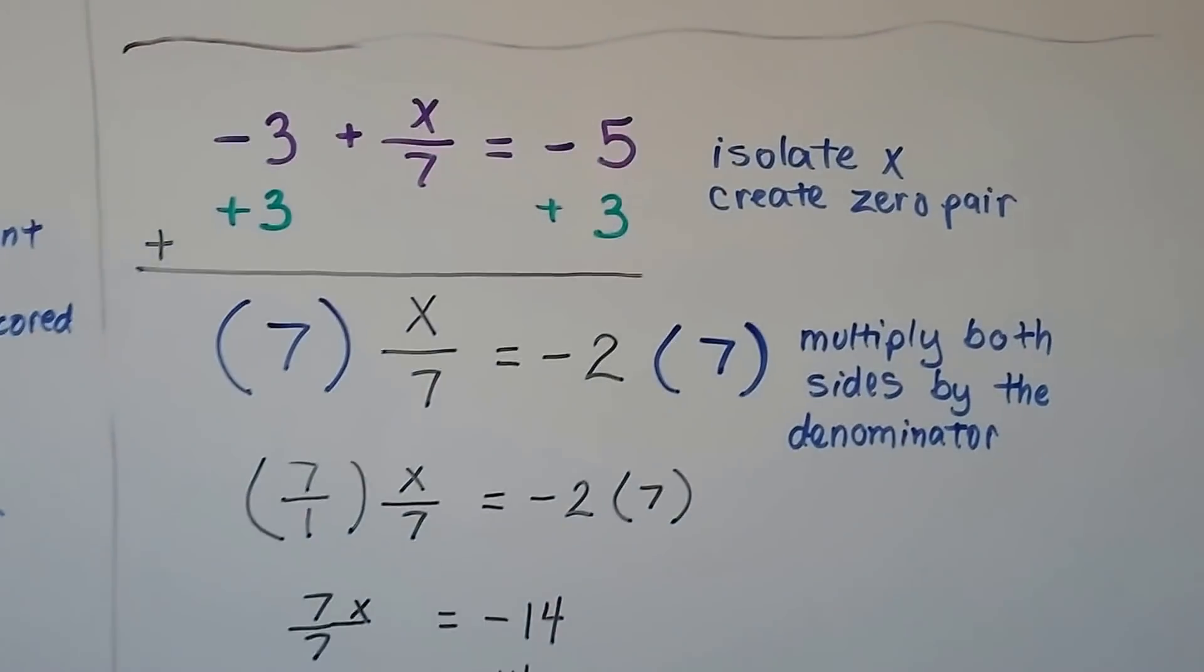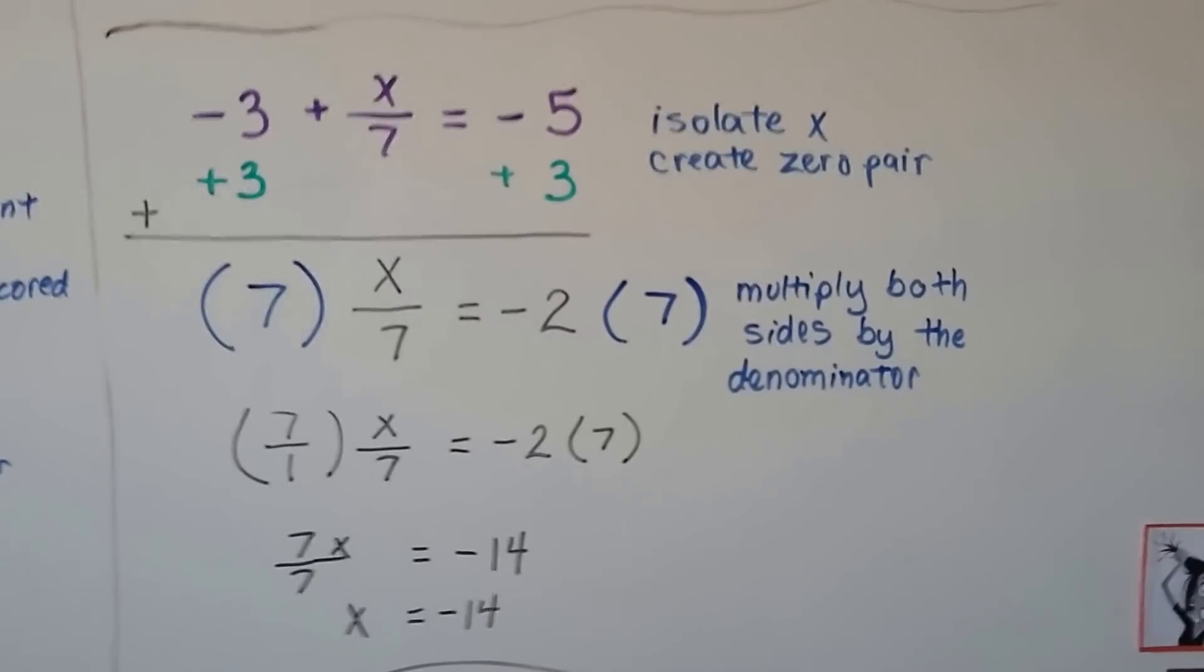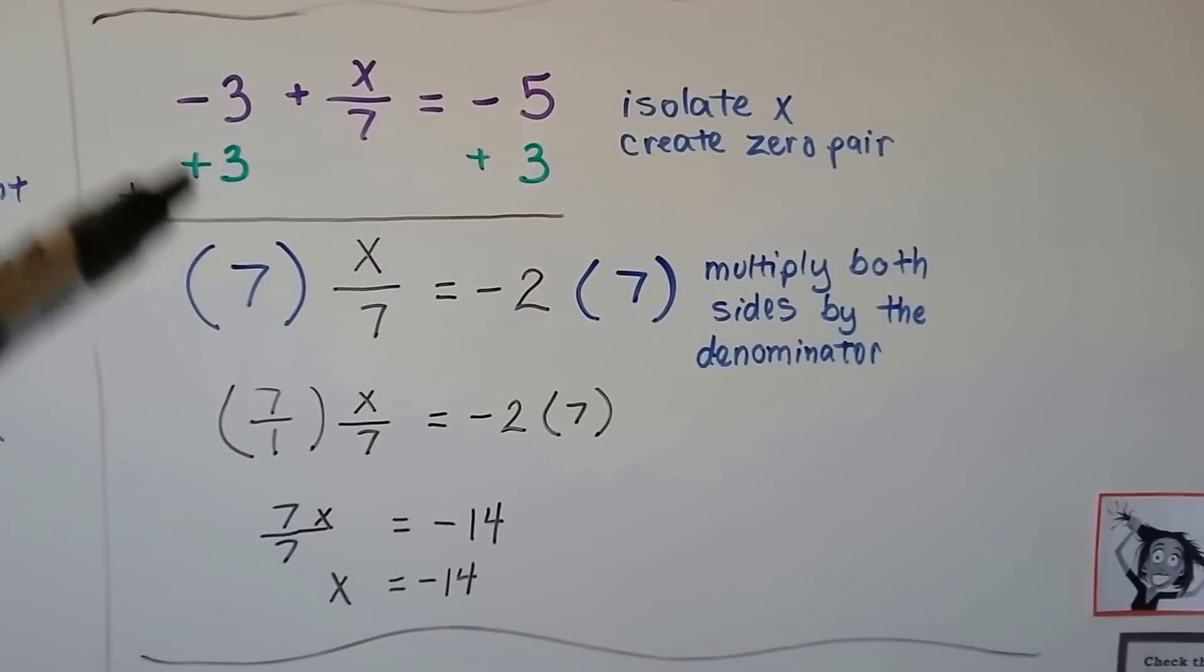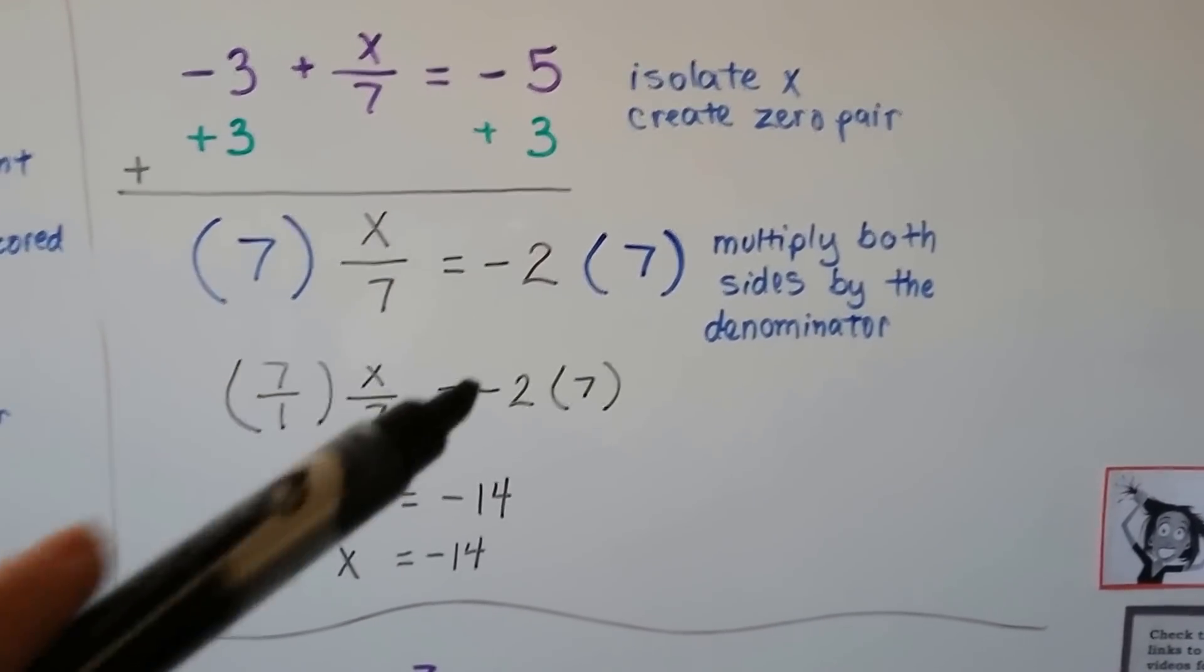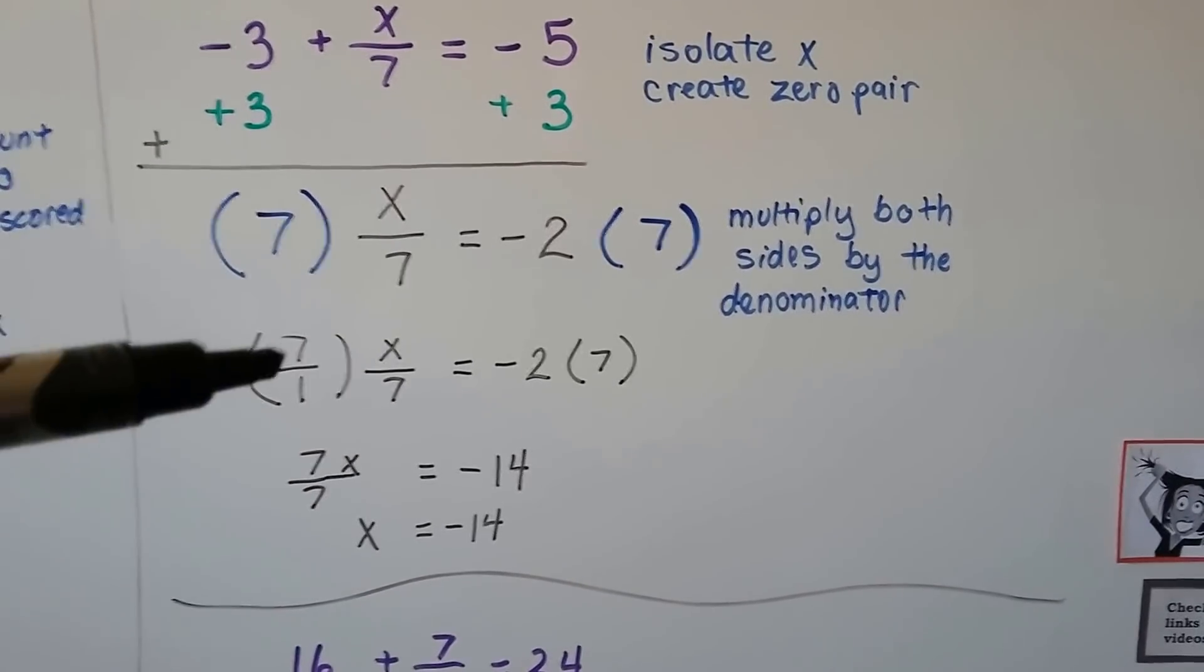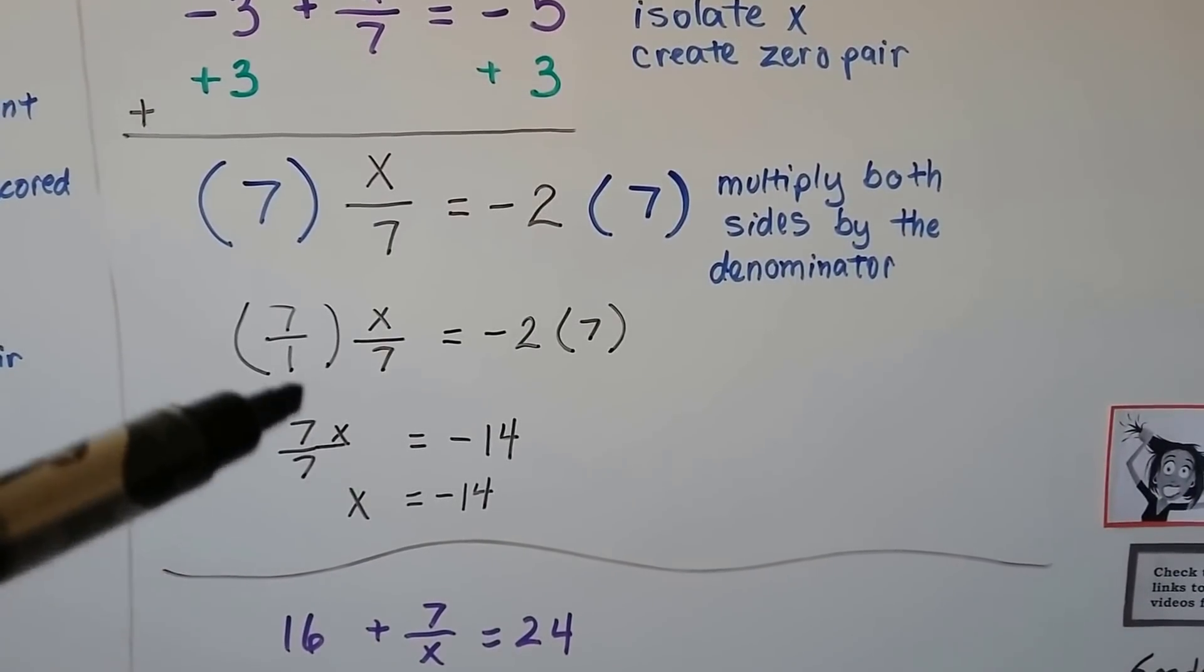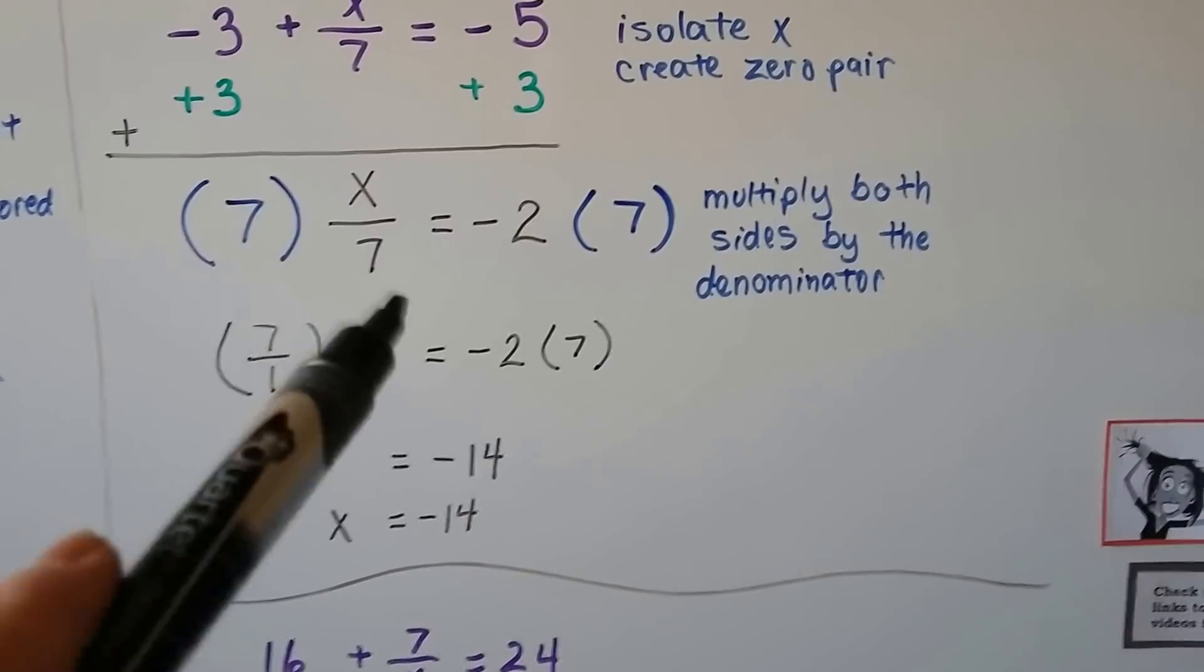We have negative 3 plus x divided by 7 equals negative 5. Fractions are little division problems. We need to isolate this numerator x and create a zero pair. We're going to add a positive 3 to both sides of the equation and eliminate this negative 3. Now, all we're left with is x divided by 7 equals a negative 2. We multiply both sides of the equal sign by this denominator 7. We get 1x equals a negative 14.